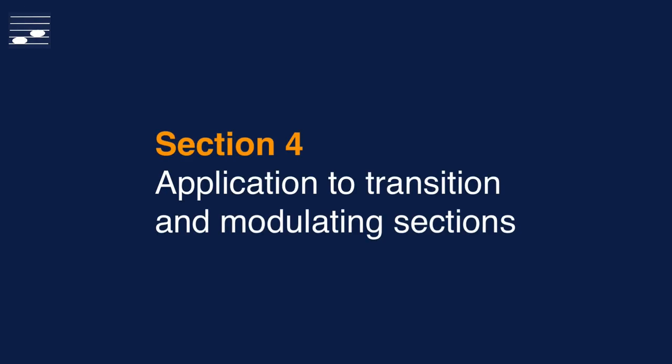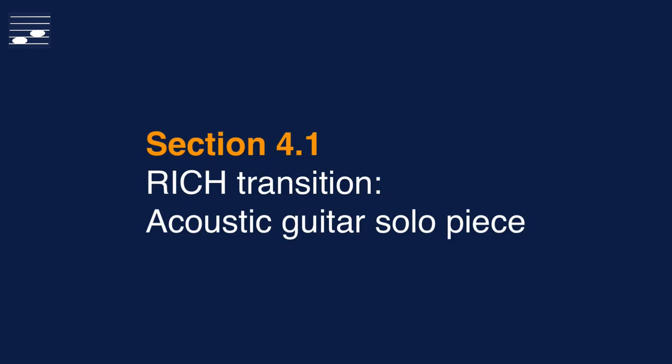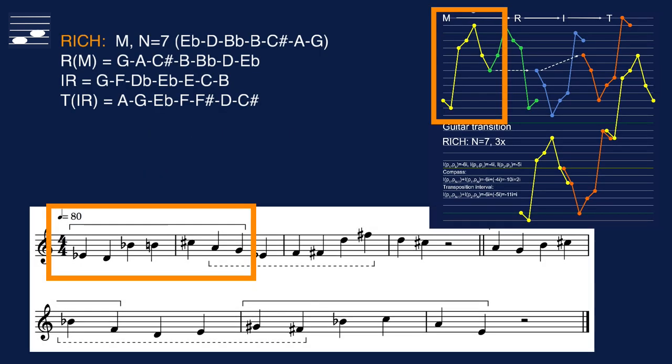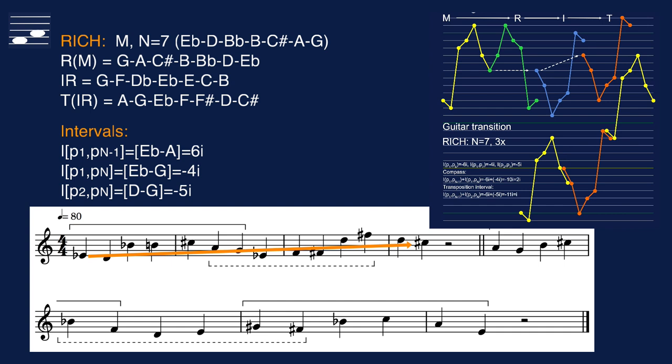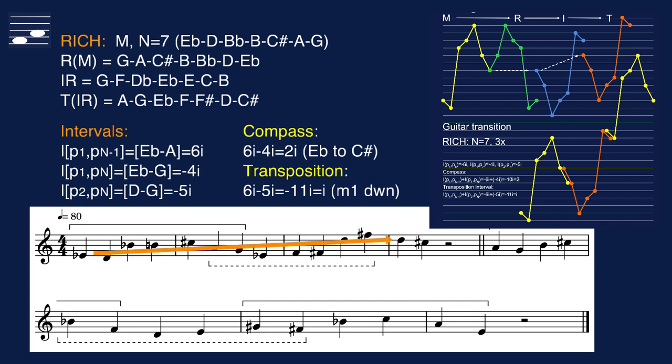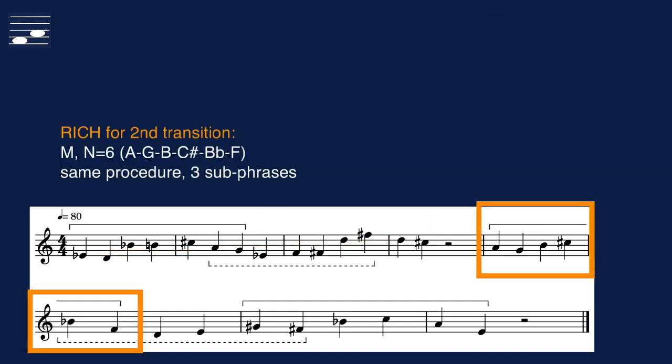Where I see a particularly strong application potential for the RI chain is in the composition of modulating transition sections. I'll demonstrate that use in a short piece for solo guitar that contains two RICH transitions. The starting motif of the first transition is an ordered seven note series. We append two subphrases through the usual procedure with the two note overlap. Each statement adds five notes to the series. The interval class calculations show a compass of two semitones between first and last note. The transposition interval is a semitone down, as the arrow from E-flat to D illustrates. The second transition is based on a six-element series, again with the chain comprising three subphrases.